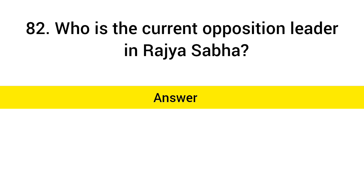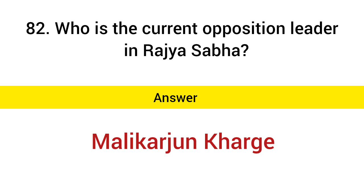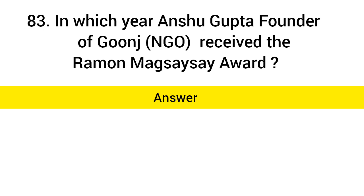Who is the current opposition leader in Rajya Sabha? Answer: Mallikarjun Kharge. In which year did Anshu Gupta, founder of Goonj NGO, receive the Ramon Magsaysay Award? Answer: 2015.